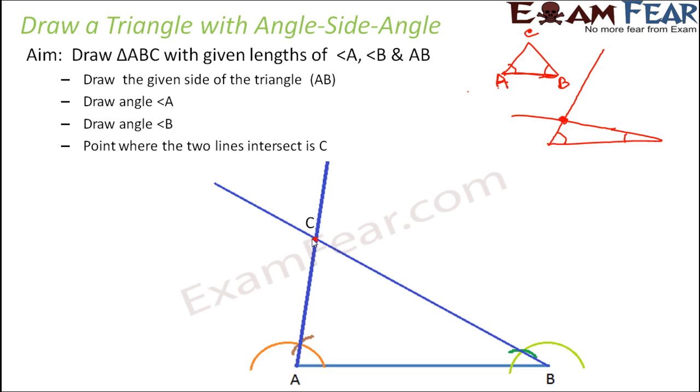So the important point to remember is that whenever you are trying to draw a triangle, both for type 2 and type 3, it is important that you should know the included side and the included angle. That is one important point.